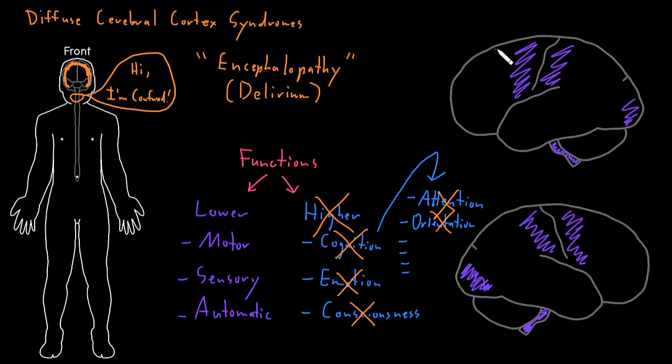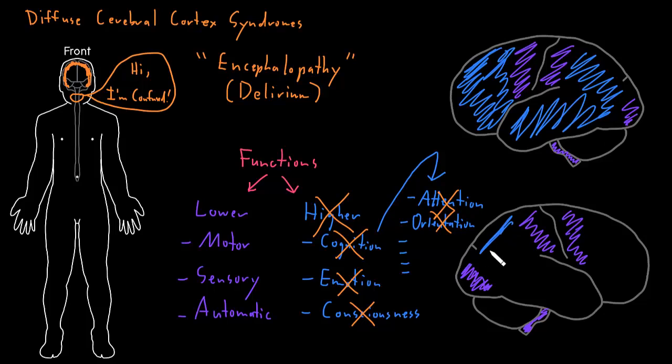And the other areas of the cerebral cortex that are these association cortices doing the more complex processing of information, and often dealing with multiple types of information, these seem to be the most vulnerable to a lot of different problems that cause these syndromes of diffuse cerebral cortical dysfunction.